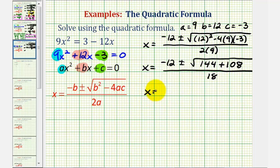Now we have x equals negative 12 plus or minus the square root of 144 plus 108 is equal to 252. For the next step, we want to simplify the square root of 252 by identifying all of the perfect square factors of 252.